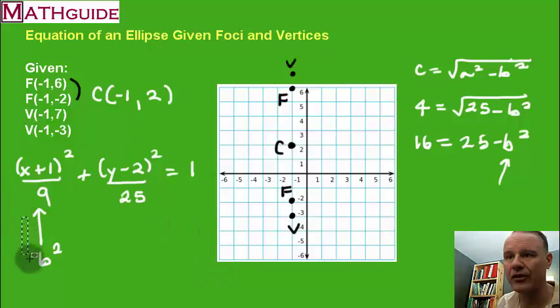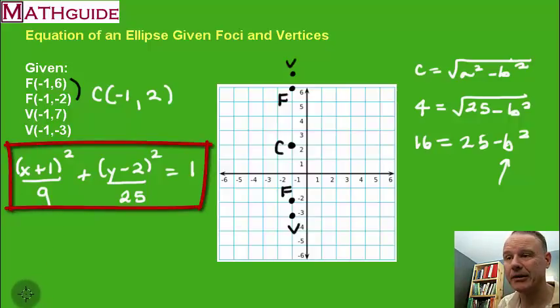So now I can get rid of this. I now know what b squared is. It is no longer an unknown. I can do a little bit better job of erasing that. So now I have the equation right there. So all it took was a little bit of ingenuity and knowledge of ellipses and the way they're graphed.